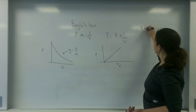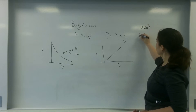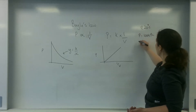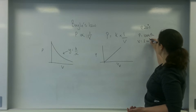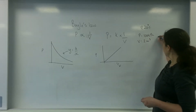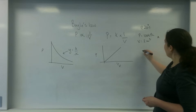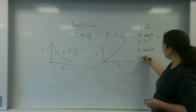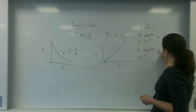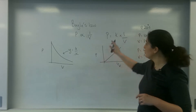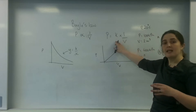I know that at 20 degrees C, my pressure is 100 kilopascals and my volume is 2 metres cubed. That's at point A. At point B, my pressure has increased to 400 kilopascals, and I want to know what my new volume is.